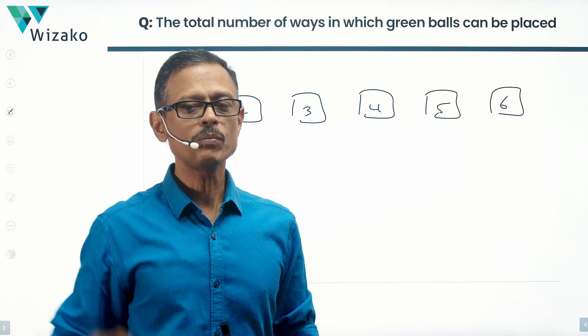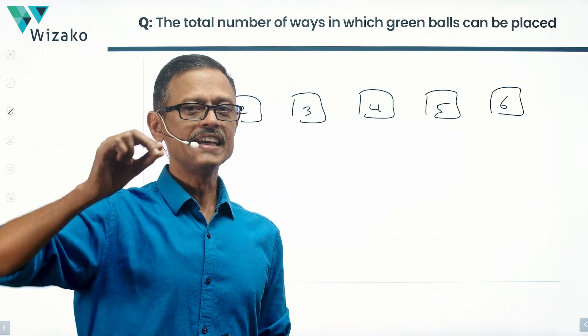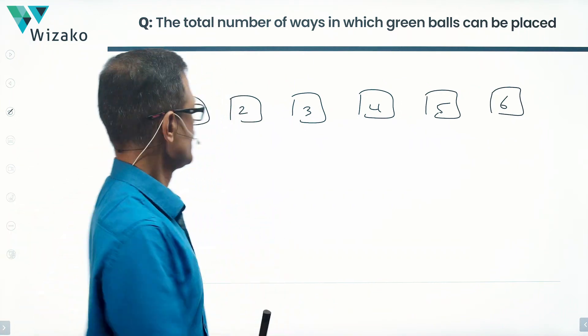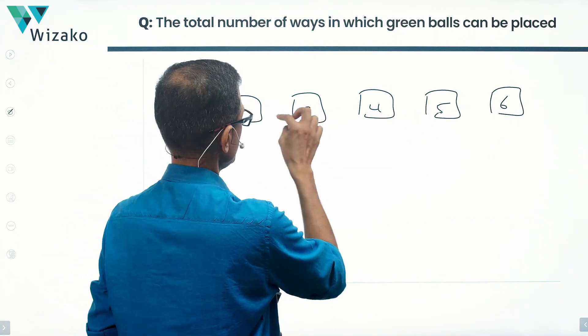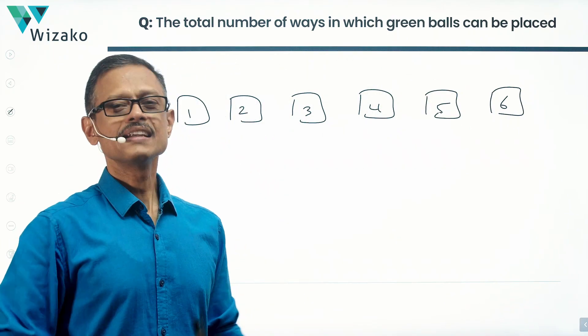If you're placing two boxes containing green balls, the condition is the boxes containing the green balls need to be consecutively numbered. So let's say if you have two boxes containing green, it should be 1, 2. It can be 4, 5. It can be 3, 4. It cannot be 2, 5. That's a constraint they're mentioning. Let's get started.